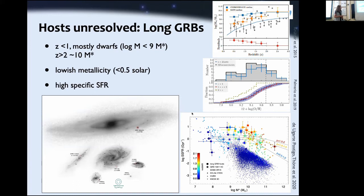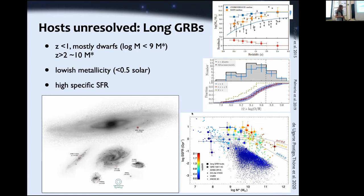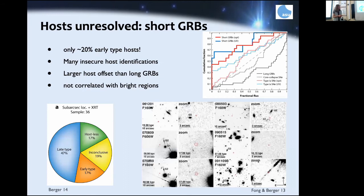What can we learn from host galaxies? Directly observing the progenitor is going to remain tricky. One problem is that these events mostly occur in dwarf galaxies, making it harder to observe the host galaxy at high angular resolution. They usually have low metallicities and high specific star formation rates, pointing to a very young, massive, low-metallicity star as the progenitor. Long GRB host galaxies typically range from small dwarf galaxies up to about Milky Way size at most.